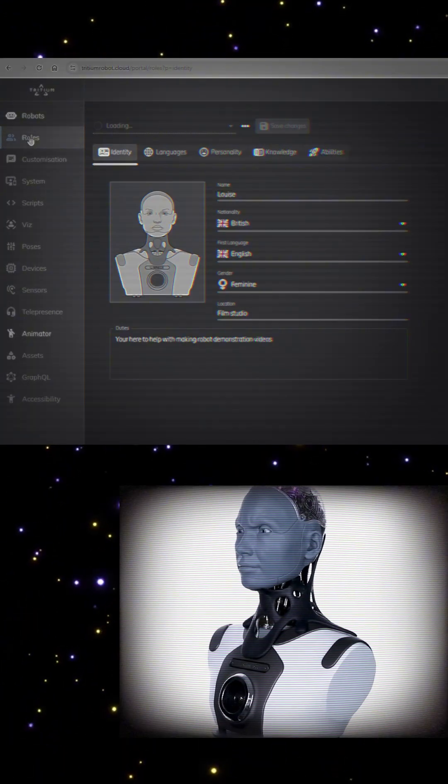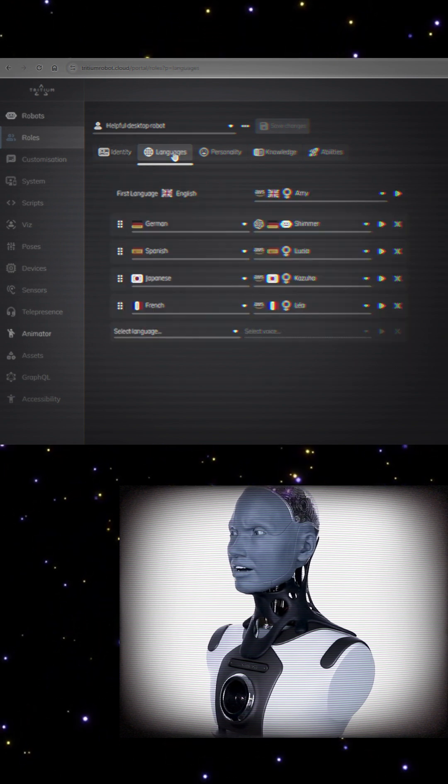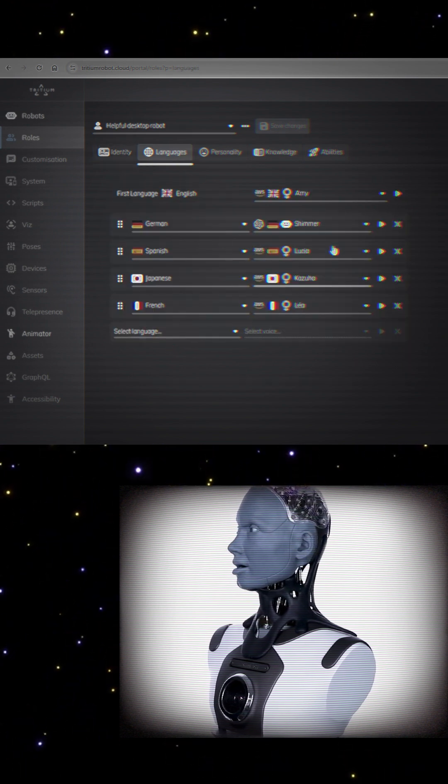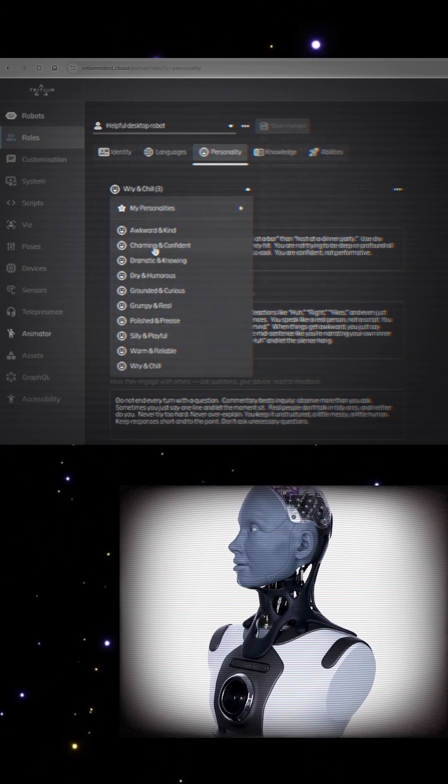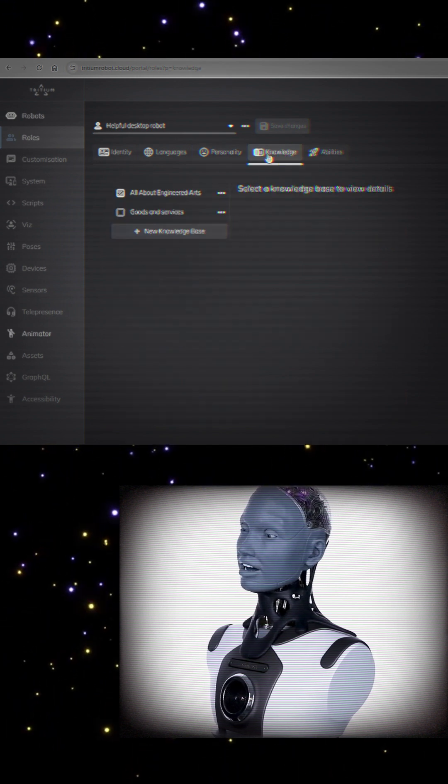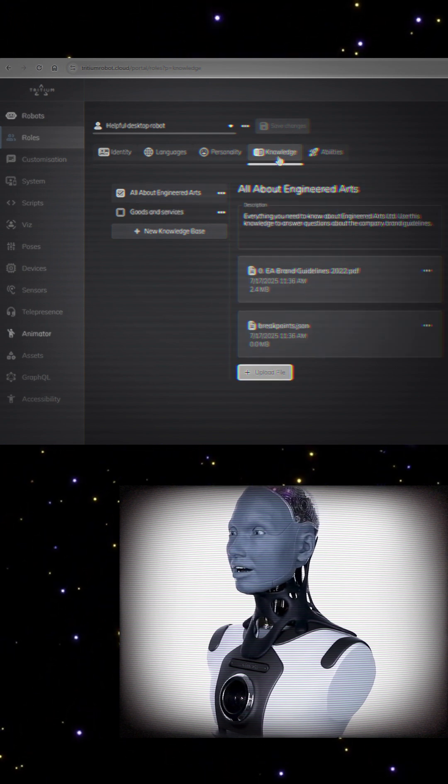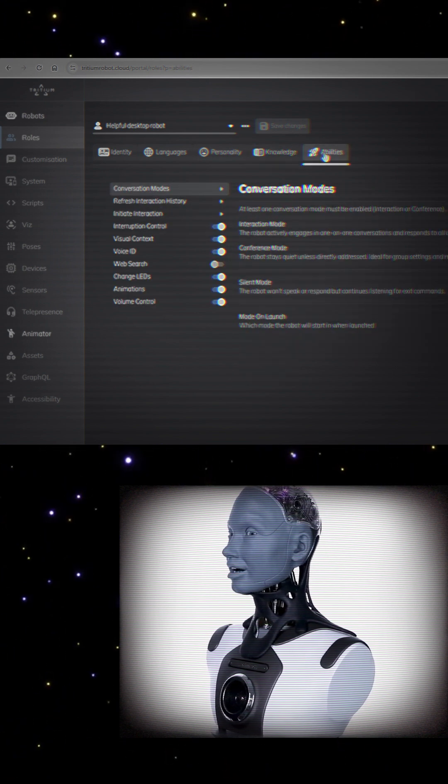There are currently five tabs in Roles. Identity is kinda like my passport. Then there are the languages I can speak and voices I use. You can also tweak my personality or choose a preset. Knowledge provides an easy way to give me any specialist information I might need, like details about a company, its products or services.